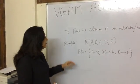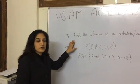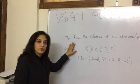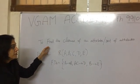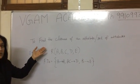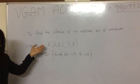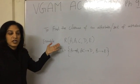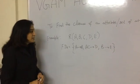Hi, today we will discuss how to find the closure of an attribute or set of attributes. We basically need the closure of an attribute to find the super key of a relation R. Let's start with an example.